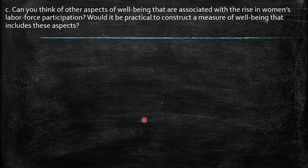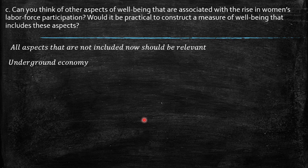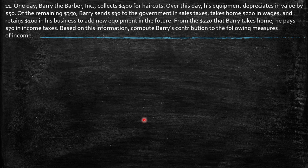Can you think of other aspects of well-being associated with the rise in women's labor force participation? Would it be practical to construct a measure of well-being that includes these aspects? Obviously, all aspects not currently included — the underground economy, labor at home, own production — are too difficult, almost impossible to collect information on. So for this reason it may not be practical, however it could be useful somehow.